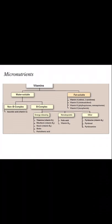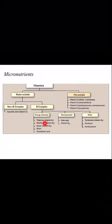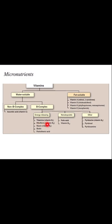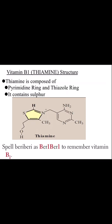We have finished the fat-soluble vitamins — vitamin A, D, K, and E. Today we are going to start with the B complex water-soluble vitamins. The first vitamin we will study and discuss is thiamine, which is vitamin B1. Vitamin B1, thiamine, is composed of two rings: a pyrimidine ring and a thiazol ring, and it contains sulfur.